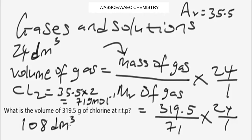So 108 dm³ is the answer. Note that the volume is in dm³, not cm³. That covers how to find the volume of any known mass of gas at room temperature and pressure.